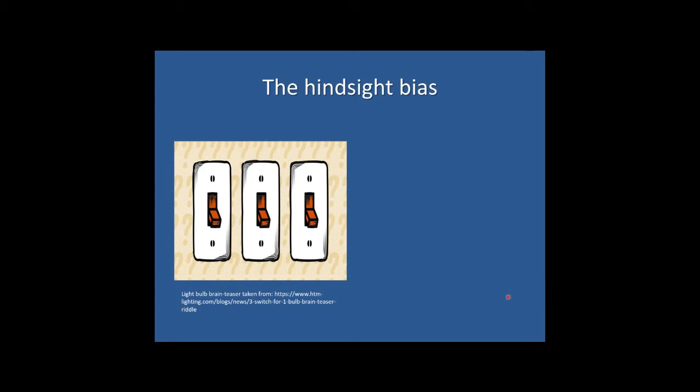You can flip the switches in whatever order you want, but you're not allowed to touch the switches once the door is opened, and you only get to open the door once to see the results of your actions. So with these constraints in mind, how do you go about definitively ascertaining which one of these switches turns the light bulb inside the closet on and off? If you'd like to have a go at solving this brain teaser then please pause the video now, because I'm about to give you the answer.